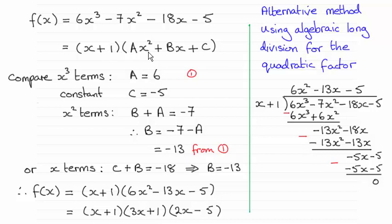So you get plus ax². So when you compare the x² terms, you've got b + a must be -7 here.